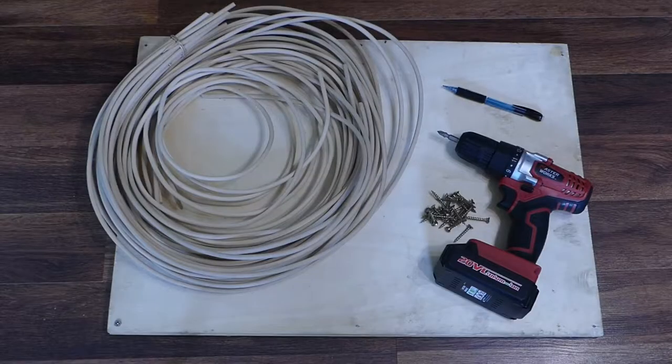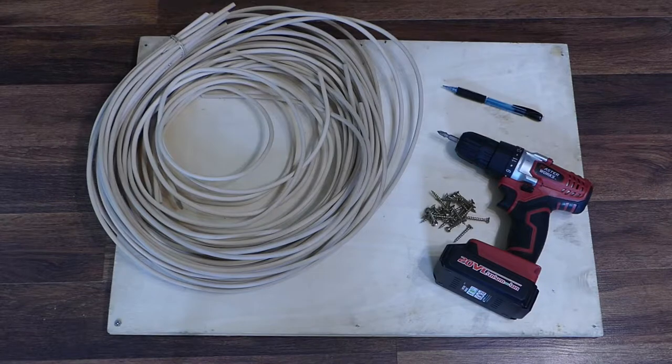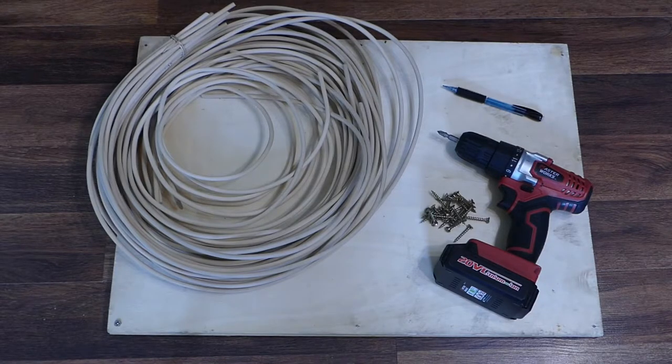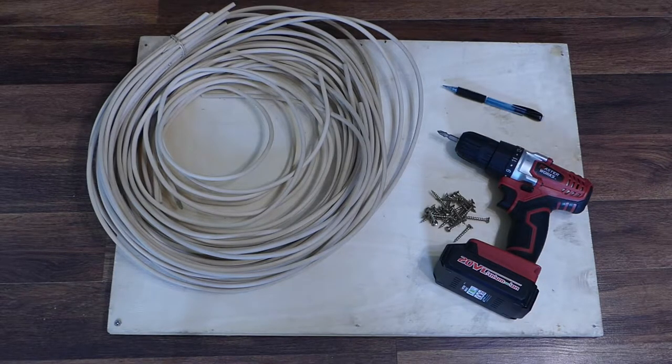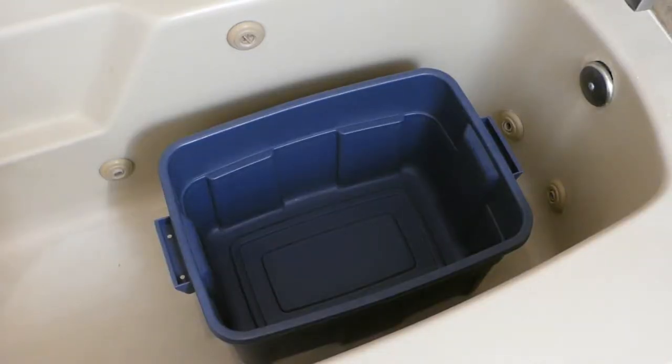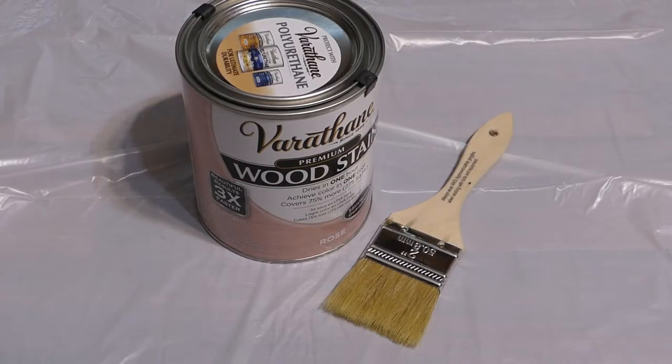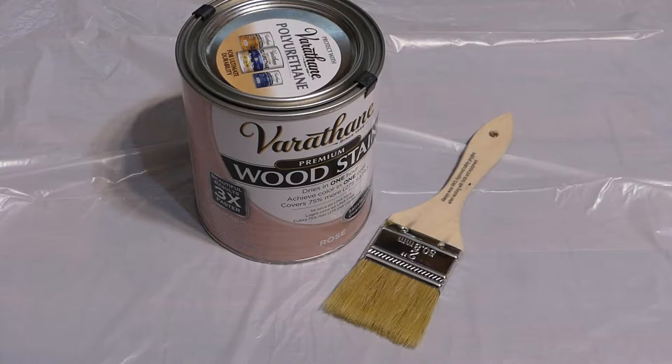You'll need round reed for basket weaving, a board larger than you want the size of your wreath to be, wood screws, a drill, and a pencil, a basin and water. You may also need paint or stain, a brush, and a drop cloth.